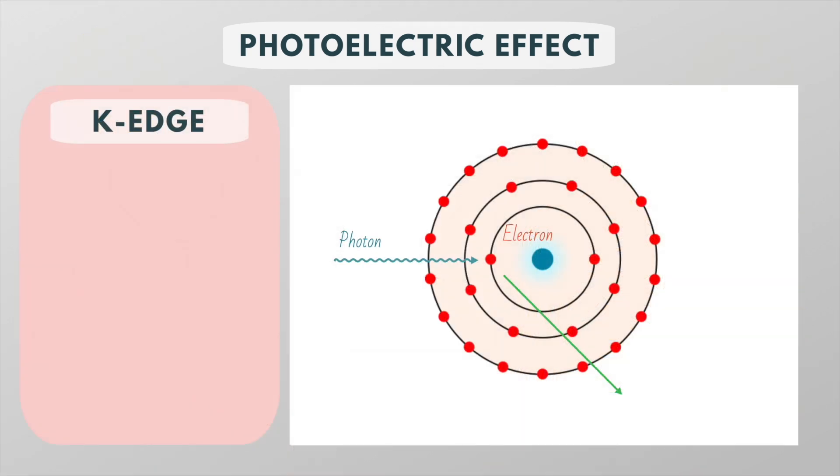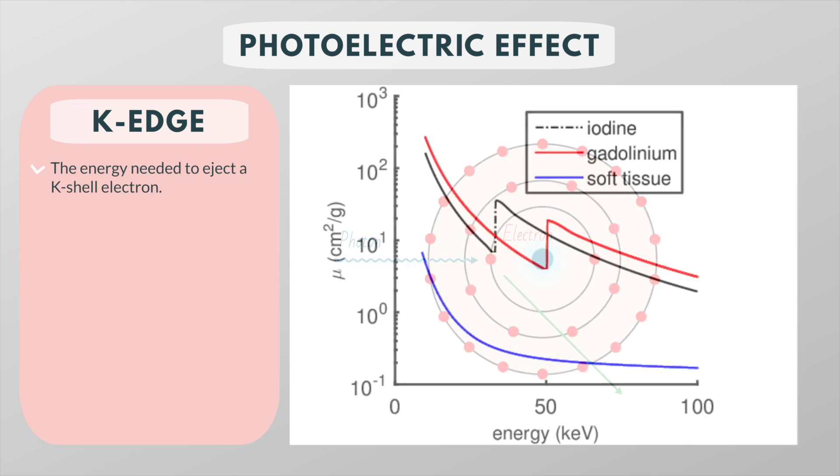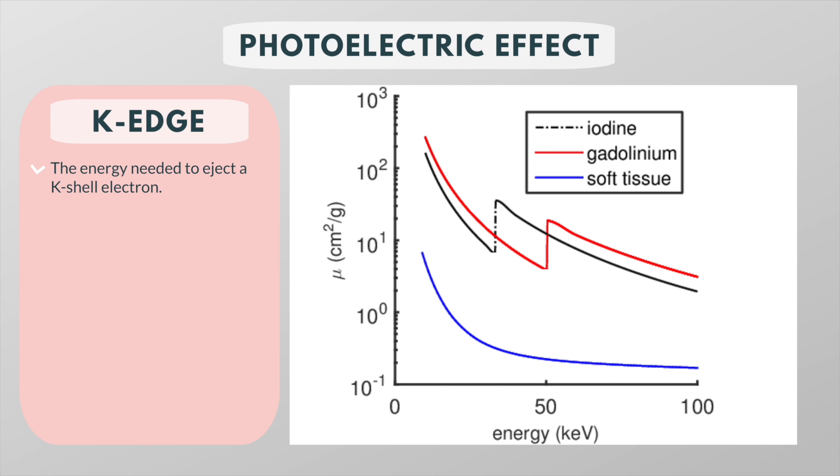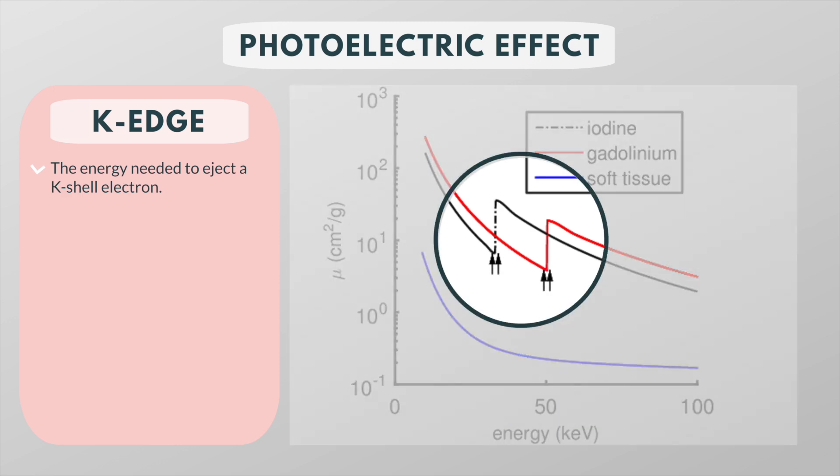Another important concept is that of the K-edge. The K-edge represents the energy needed to eject the K-shell electron. You will see an abrupt increase in the photoelectric absorption of x-ray photons at the energy level just beyond the binding energy of the K-shell electrons.